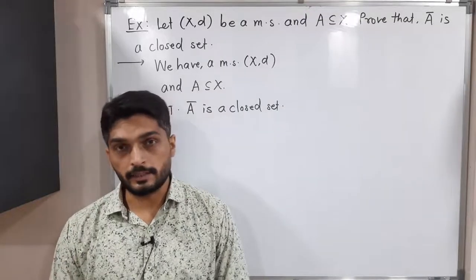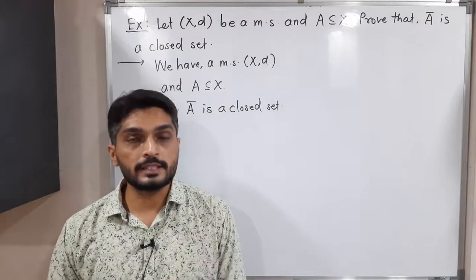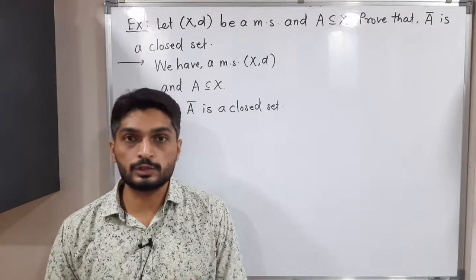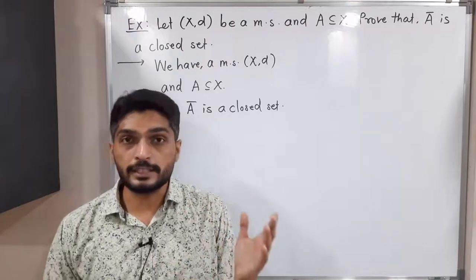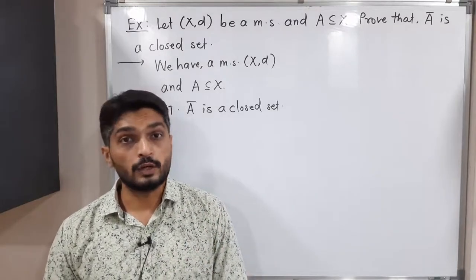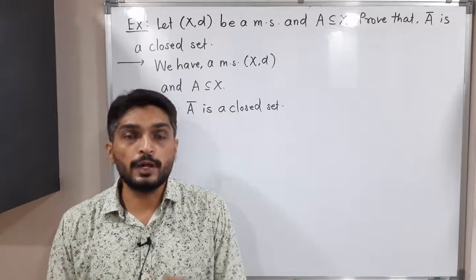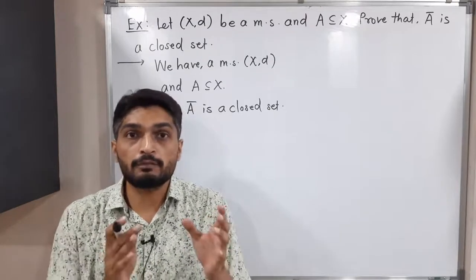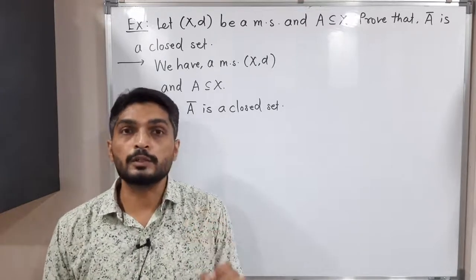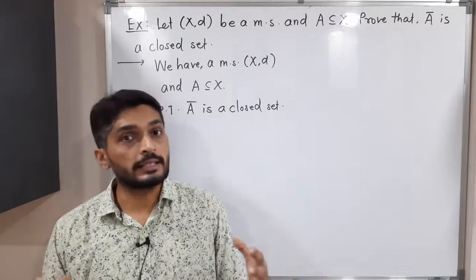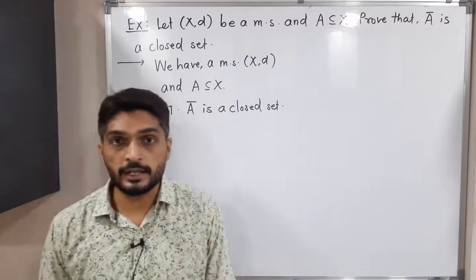Let us discuss this result. We have a metric space X, a subset A of X, and we need to prove that Ā (A-bar) is a closed set. Recall that a set is closed if its complement is open. From previous results, we also know that a set is closed if and only if it contains all its limit points. So we have to prove that Ā contains all its limit points.